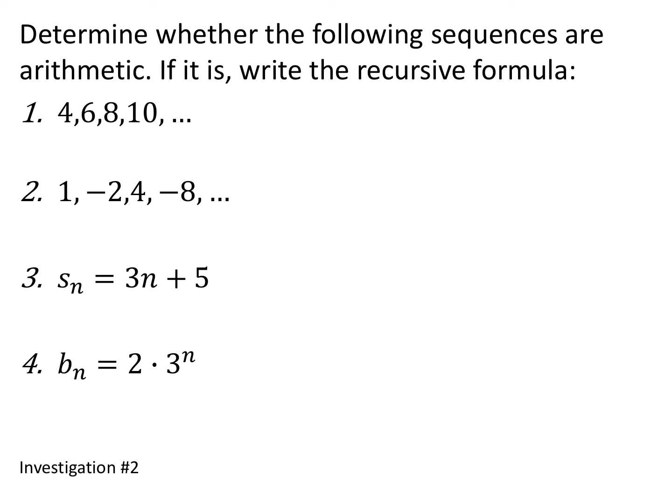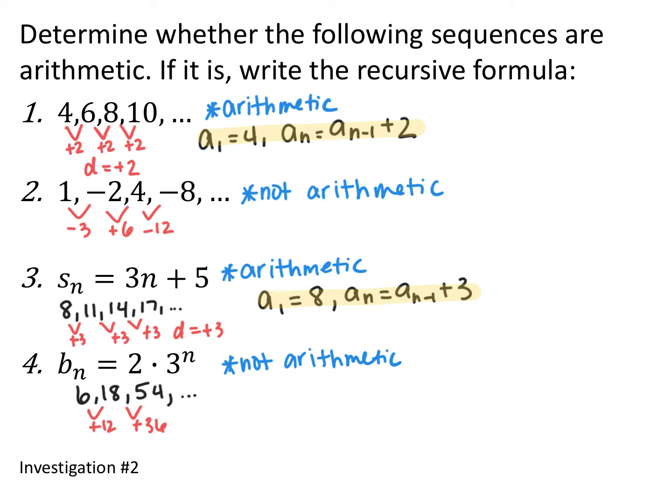Keeping in mind that arithmetic sequences add the same value every single time, we have two sequences that give us a list of the first few terms and two sequences that give us the nth term or explicit formula. For the first one, you add 2 to get to 6, add 2 to get to 8, add 2 to get to 10 — you're adding the exact same value every single time, so this is arithmetic with a common difference of plus 2.